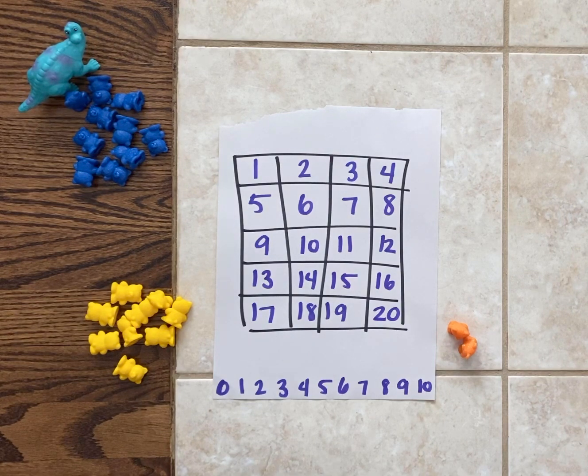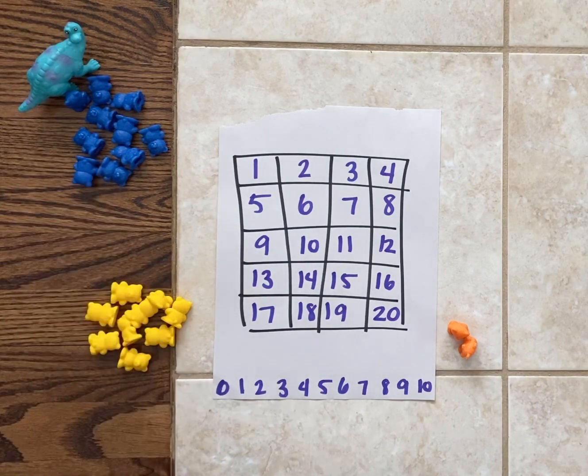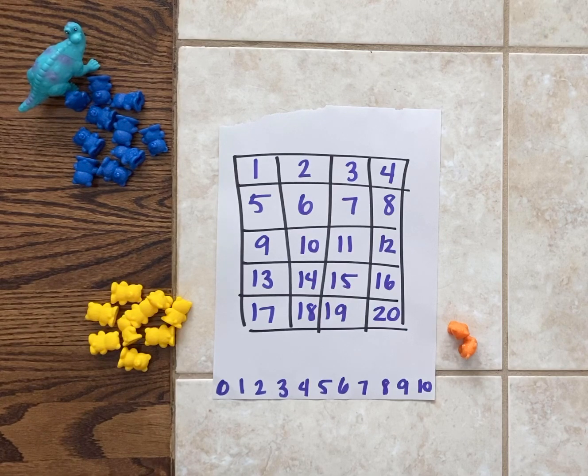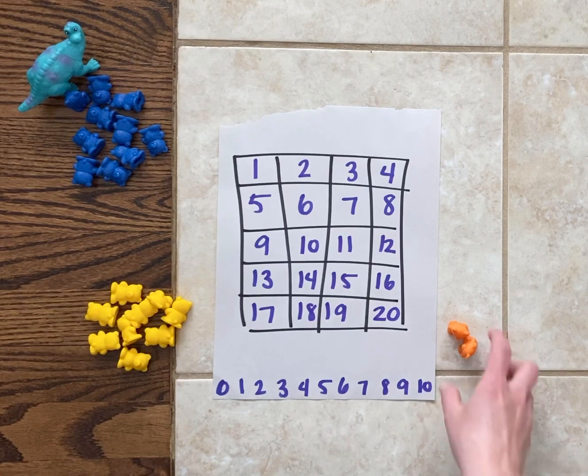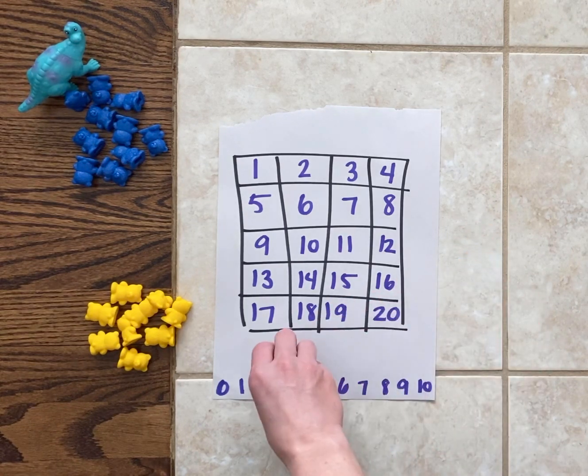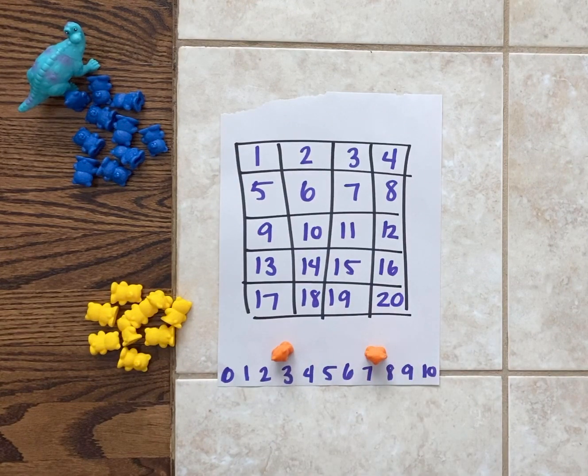For this game I'm going to be playing with yellow and my imaginary friend dinosaur is going to be playing with blue. If you have a live and in-person buddy to play with at home feel free to play with them too, but I don't have anybody to play with me here today so I'm going to be playing against dinosaur. You will also need two additional markers to mark the bottom of your board.